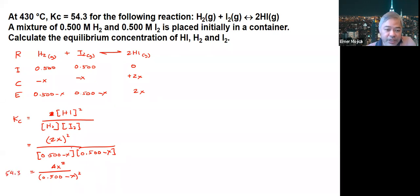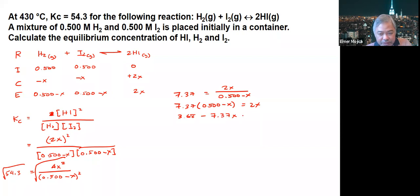We take the square root on both sides. The square root of 54.3 is around 7.37, so you have 2X over (0.5 minus X) equals 7.37. Transposing gives 3.68 minus 7.37X equals 2X, so 3.68 equals 9.37X. Dividing both sides by 9.37, X equals 0.393.